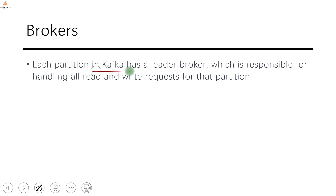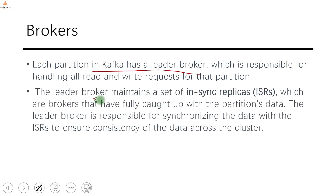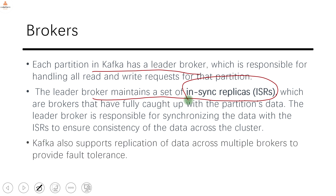Each partition in Kafka has a leader broker. The leader broker maintains a set of in-sync replicas (ISR). In-sync means the information is consistent on all replica nodes. This is important because if a leader node goes down, another node should be able to take its place. In-sync replicas play a very critical role here. There is configuration around all this that we will see in detail when we cover broker configuration.